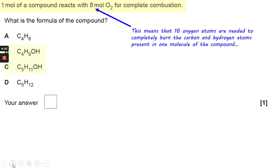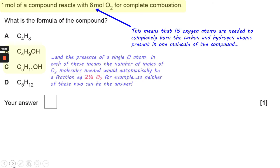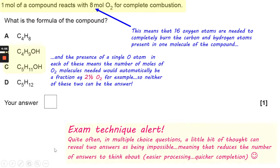If we look at the two options B and C, you can see the presence of a single oxygen atom within them — the OH group there and there — means that the number of moles of O2 molecules needed would automatically have a half in there, because one oxygen atom is the equivalent of half an oxygen molecule. So neither of those two would be the answer.